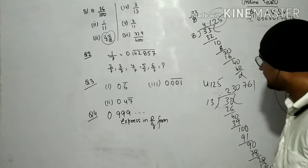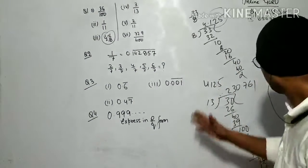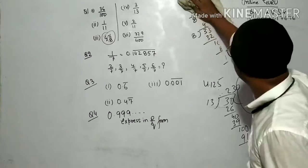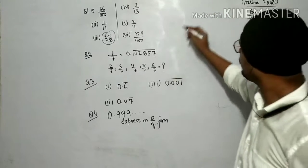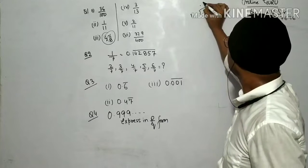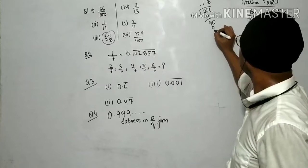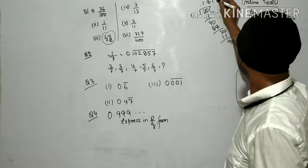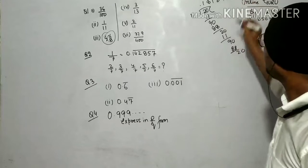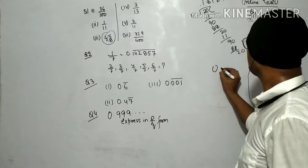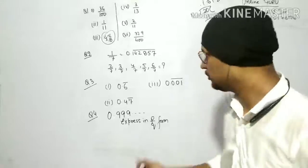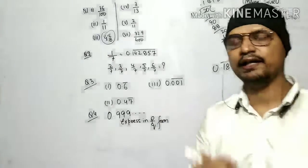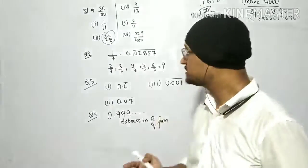As you can see, it is not terminating. It will keep going. So it is non-terminating and non-recurring. Next, 2 upon 11: divide 2 by 11 — 11 × 1 = 11, remainder 9; bring down 0, 11 × 8 = 88, remainder 2. Then again we get 2, then 1 — so 1 and 8 are repeating. So the answer is 0.18 with bar, meaning 18 repeats. This is both recurring and non-terminating.